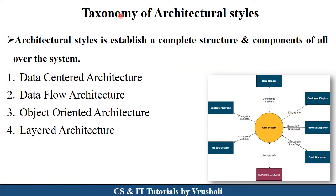The next topic is taxonomy of architectural style. From an exam point of view, these types of architecture are one of the most important questions. There are four types of architectural style: data centered architecture, data flow architecture, object oriented architecture, and layered architecture. Let's discuss one by one.